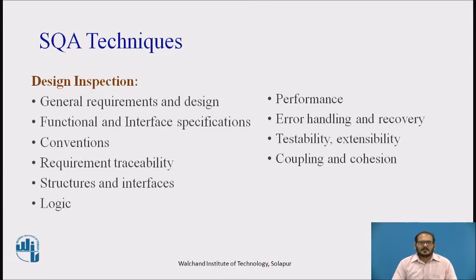Design inspection includes review of general requirements and design, functional and interface specifications, conventions, requirement traceability, structures and interfaces, logic, performance, error handling and recovery, testability and extensibility, and coupling and cohesion. These are the different design inspection elements used to improve software quality assurance.